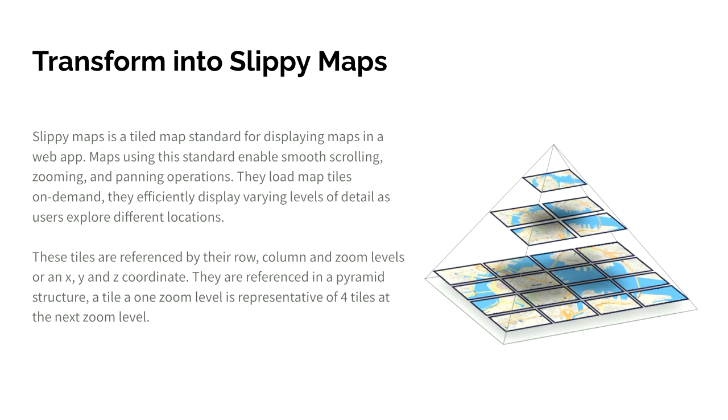A bit more about the slippy tile map format. It works in a pyramid structure where at the top you have one tile representing a large area — one tile for the entire Earth. At the bottom you have finer detail with tiles representing close to the ground. At the top you could have a single tile, all the way down to billions of tiles representing higher detail at ground level. These tiles are separated into rows, columns, and zoom levels — an X, Y, and Z coordinate.